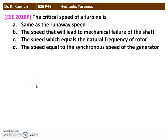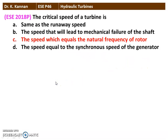The next question is from the 2018 question paper. The critical speed of a turbine — there are four options: same as the runaway speed; the speed that will lead to mechanical failure of the shaft; the speed which equals the natural frequency of the rotor; the speed equal to the synchronous speed of the generator. The correct option is: the speed which equals the natural frequency of the rotor. The critical speed of the turbine is equal to the speed that matches the natural frequency of the rotor.